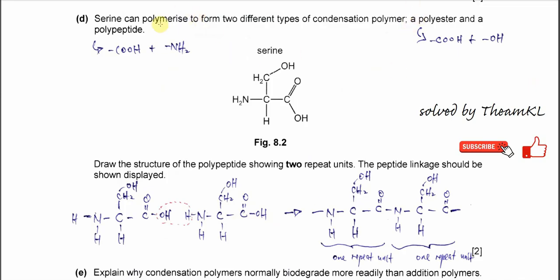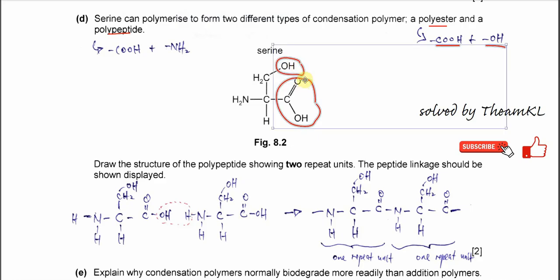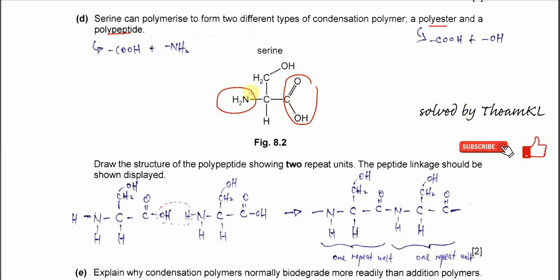Part D. Serine can polymerize to form two different types of condensation polymer: a polyester and a polypeptide. For a polyester, the COOH and OH groups react. For a polypeptide, the COOH and NH₂ groups react. The question asks to draw the structure of the polypeptide showing two repeat units.